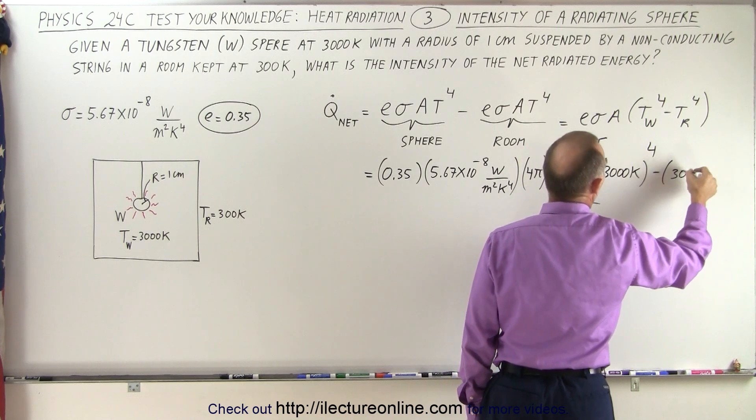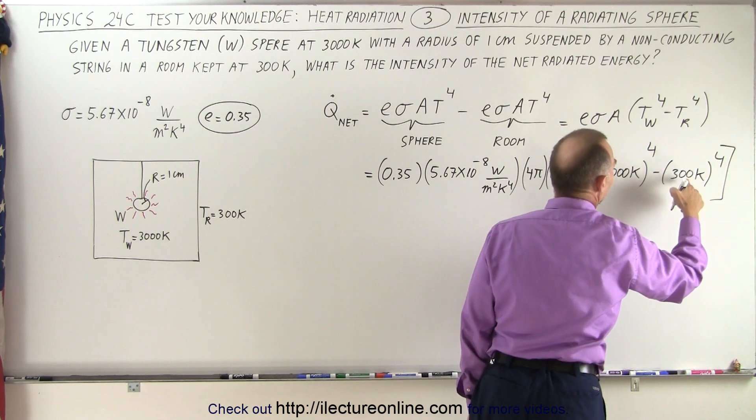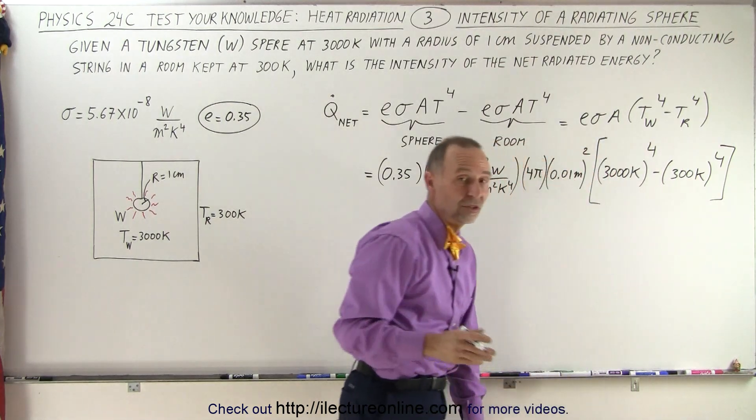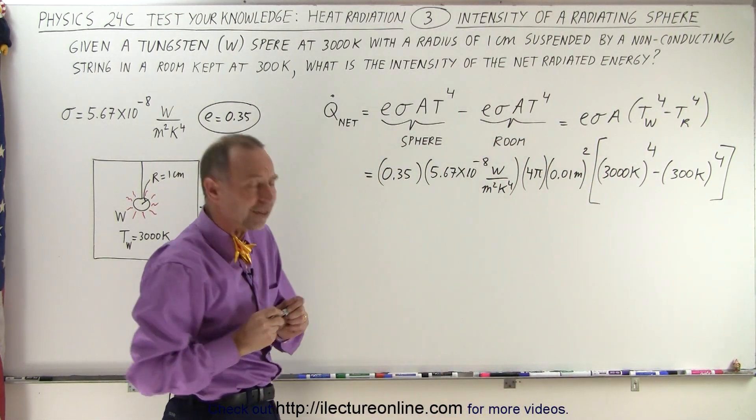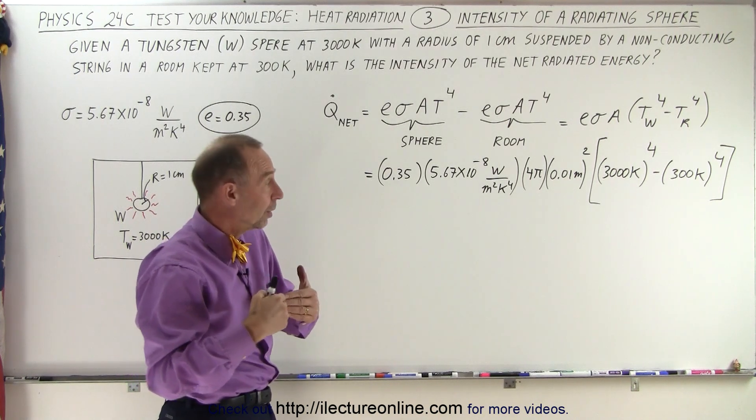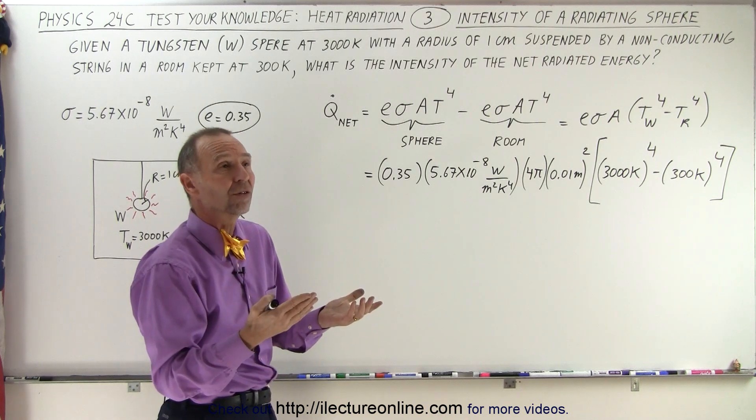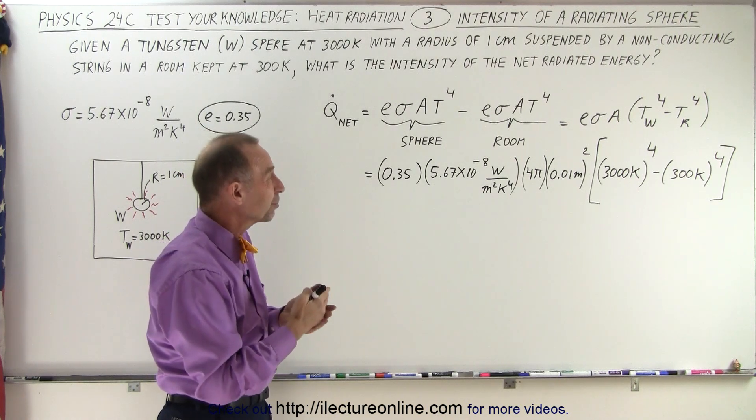minus 300 Kelvin to the fourth power. Now, notice that the ratio between those two, since 3,000 is 10 times the temperature of the room, 300 Kelvin, if you then raise that to the fourth power, that would be a difference of 10,000,